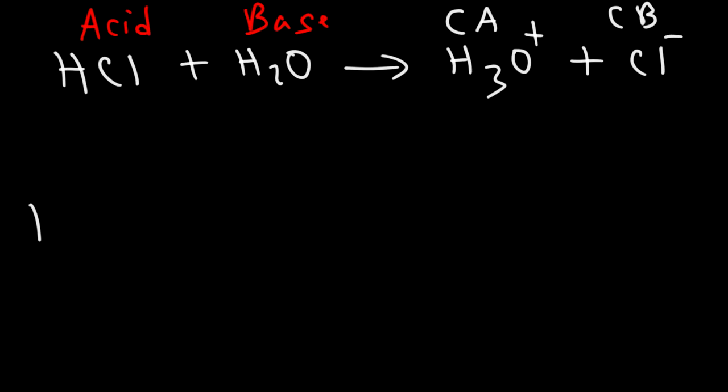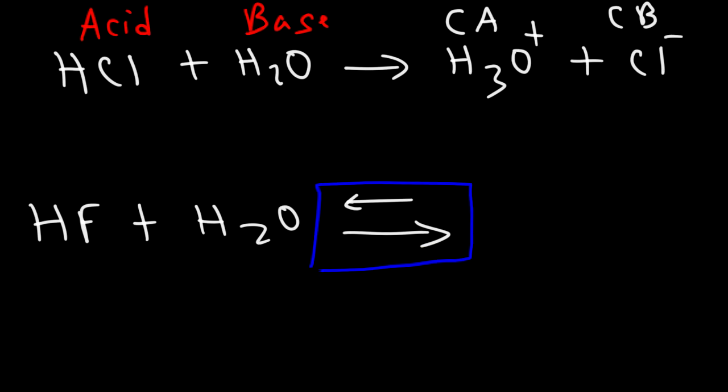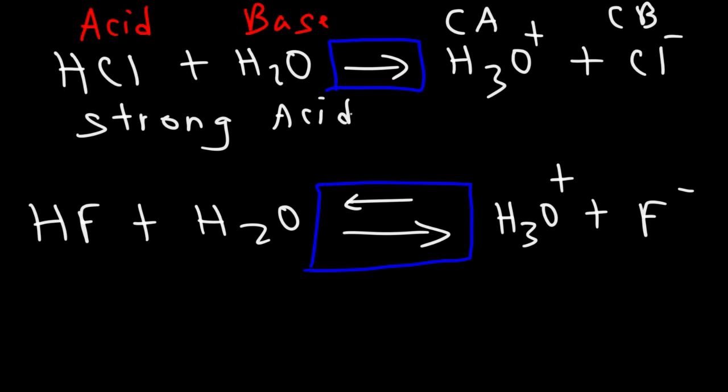Now, when dealing with a weak acid like HF, the reaction is going to look very similar. The only difference is it's reversible. You're going to have two arrows instead of one because it can go in both directions. But you're going to get the conjugate acid H3O+ and the conjugate base F-, or the fluoride ion. So that's the difference between a strong acid in water and how a weak acid interacts in water. So one is reversible, and the other, for the most part, is not.